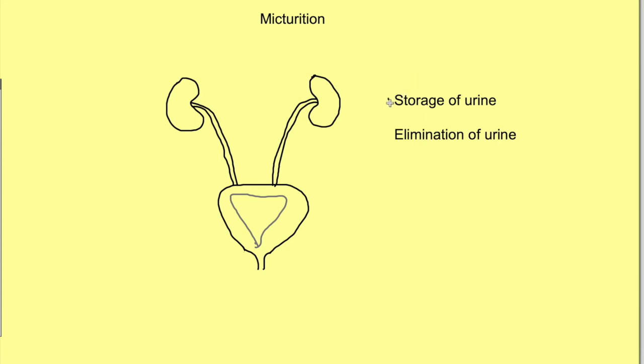The urinary bladder has two main functions: storage of urine and elimination of urine. Since kidneys continuously form urine, the urinary bladder should have the characteristic to store the urine, and when it is filled, it should have the ability to empty itself. Micturition is the process by which the urinary bladder empties itself when it becomes filled.